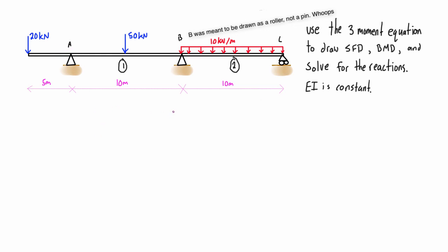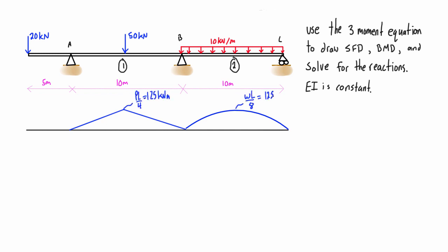The first thing that we want to do when we're doing the three moment equation is we want to draw the bending moment diagrams for these spans with the applied loads as if they were simply supported, and then we want to calculate the area of each of these and the distances of their centroids out to the outer sides of those spans.